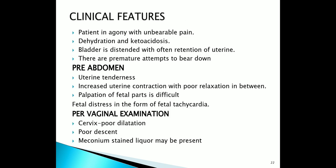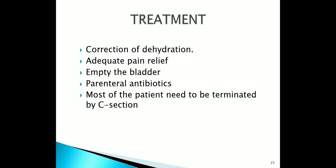Clinical features: the patient is in agony with unbearable pain referred to the back. There is evidence of dehydration and ketoacidosis. Bladder is frequently distended and often there is retention of urine. There are premature attempts to bear down. On per-abdominal examination, uterine tenderness is present, increased uterine contraction with poor relaxation in between, palpation of fetal parts is difficult, and fetal distress in the form of fetal tachycardia. On per-vaginal examination, cervix shows poor dilatation, poor descent, and meconium staining may be present. Management: correct the dehydration, give analgesics for pain relief, empty the bladder, give injectable antibiotics. Most patients need to be terminated by caesarean section.